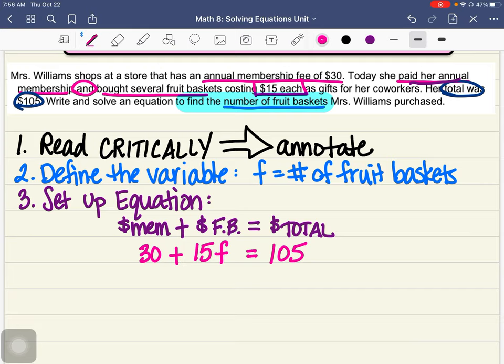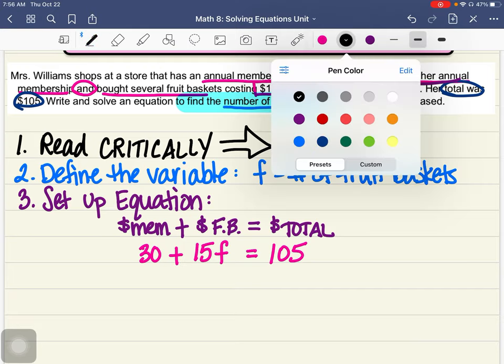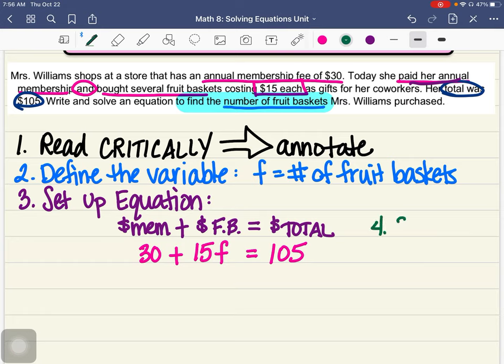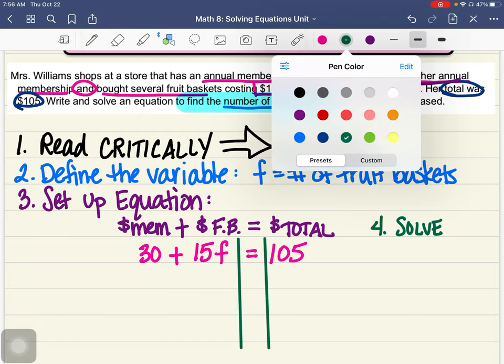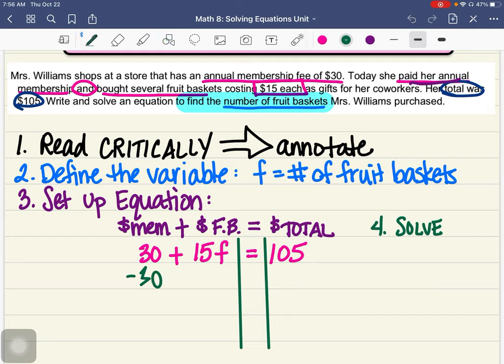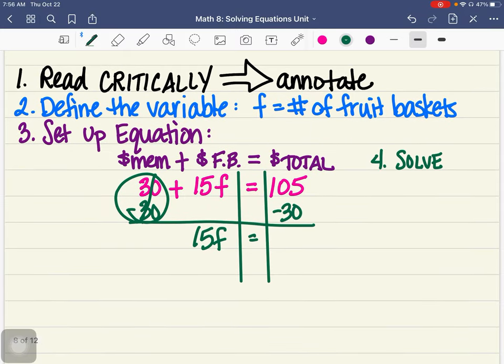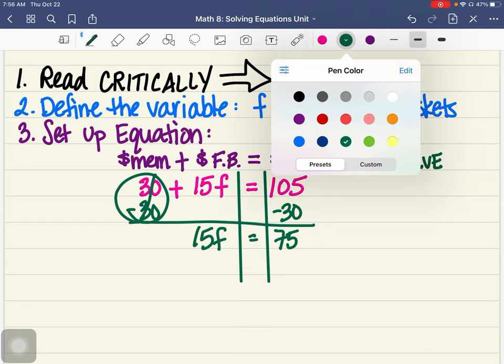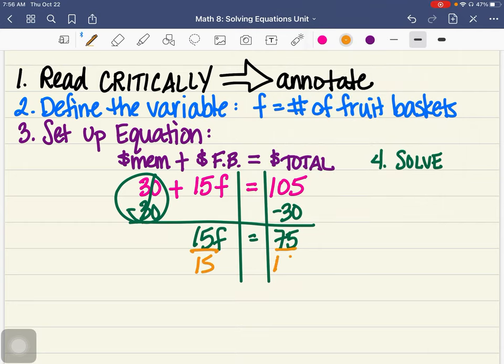That's going to equal the total, was $105. So now I have an equation. Now I'm going to solve it. So four is we're going to solve it. I'm going to go through this fairly quickly. I'm going to minus 30 from both sides. Then I have 15F equals 105 minus 30 is 75. Then I'm going to divide by 15 and F equals 5.